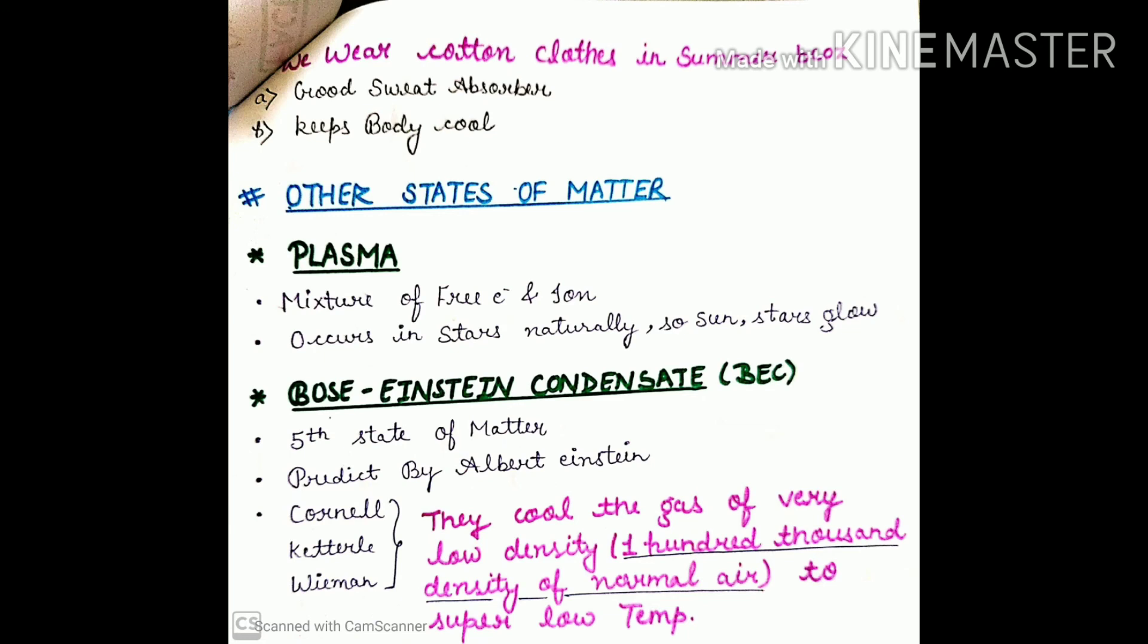Next is other states of matter. We have three states of matter: solid, liquid, and gas. But there are extra states: plasma and Bose-Einstein condensate. Plasma is basically a mixture of free electrons and ions. This occurs in stars and sun. Due to presence of plasma, stars and sun glow or shine.